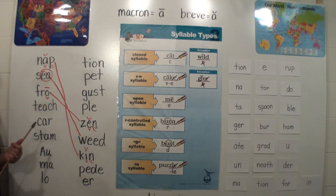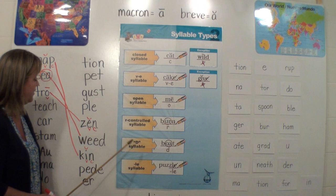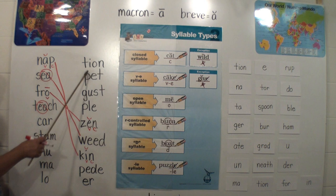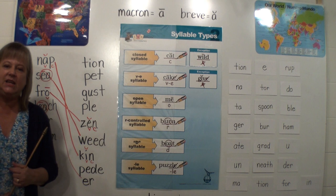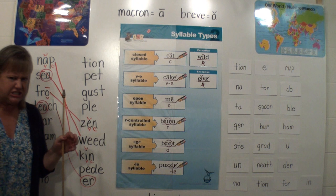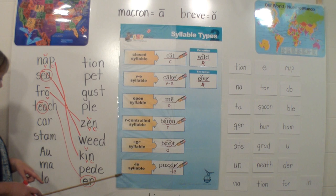Next word: "teach." Do you know what kind of syllable that is? Do you see the E-A? It's a vowel team — our D syllable type, our vowel digraphs. I'll circle it, put a macron above the E, cross out the A; we hear 'ee.' Teach. What ending are we going to put on? If you said "er," you're right: teacher. E-R is our r-controlled syllable — remember our doggy growl. When we put "er" at the end of "teach," it means one who teaches is a teacher. One who bakes is a baker.